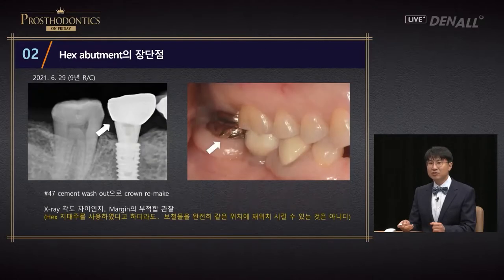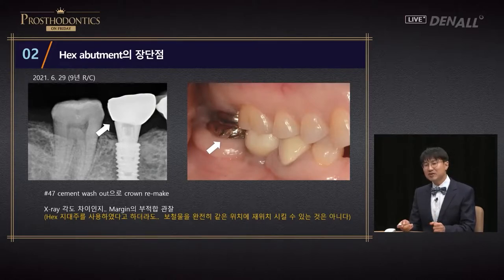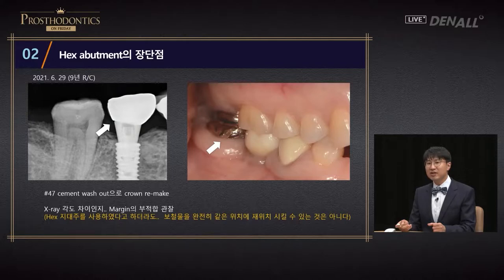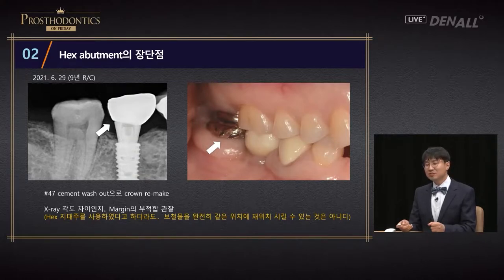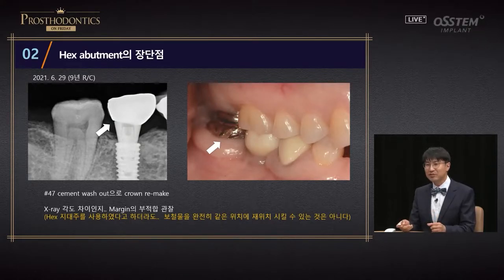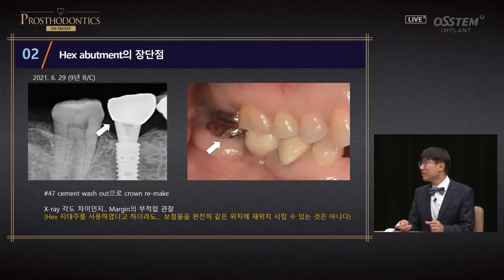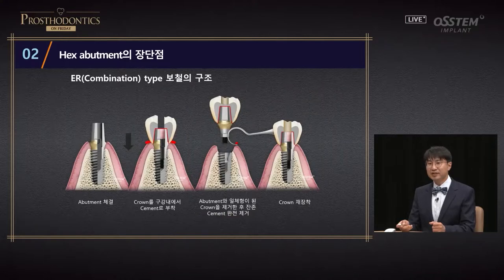This is 6 years after, and the patient came by just recently, 9 years after. I provided a new crown. Even if you use hex abutment, you can position the hex in the same position. But as for restoration, it is very difficult to put it back to its original position. Just because it's hex, it doesn't mean that you can put the restoration back to its original state. There are errors and contact adjustments. If we make mistakes, deviations can occur.